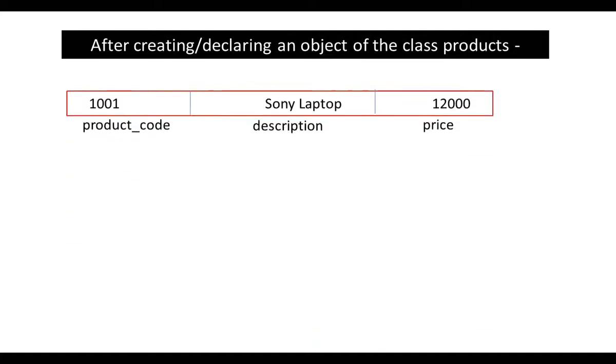Now see, after creating or we can say declaring an object of the class products, what we will achieve is in the RAM, in the computer's memory, we will have an object like this. This is the object. As you can see, this is made up of these member data: product_code, description, and price.